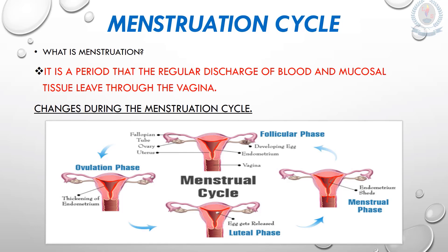Day 19 to day 28, the uterus is ready to support the growth and development of the fertilized egg. If the egg is unfertilized, the uterine lining and the egg will be shed in the next menstrual cycle. I hope you all can understand the changes during the menstruation cycle.